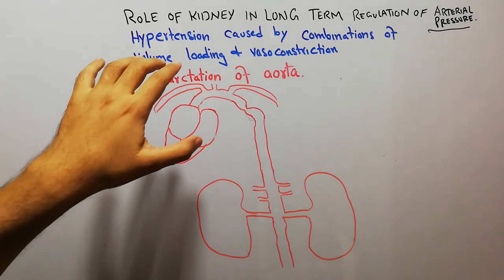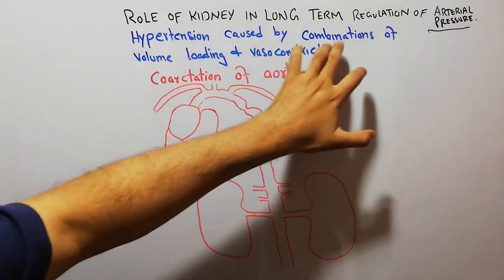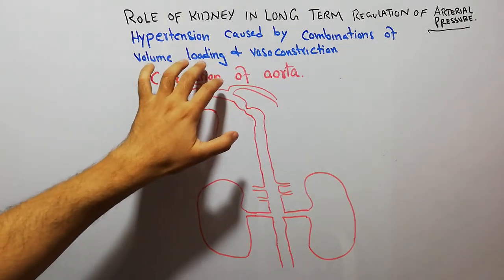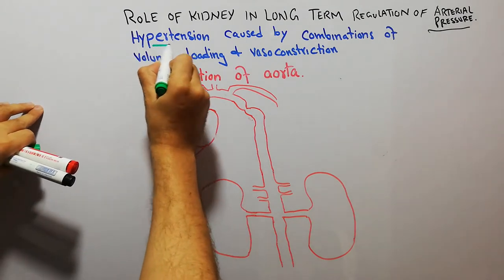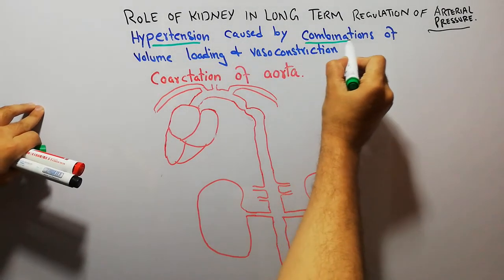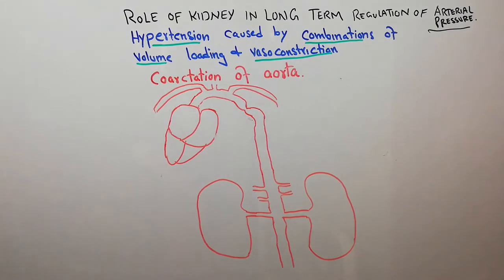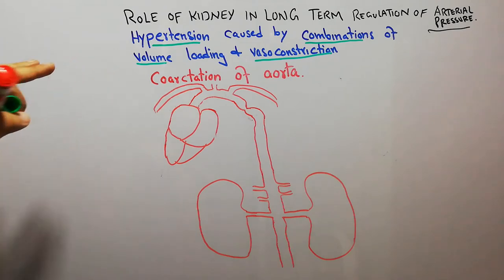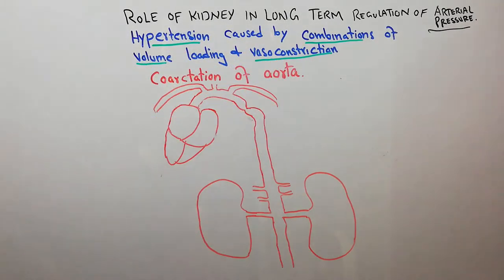Today we are going to start a new series of lectures about hypertension caused by combinations of volume loading and vasoconstriction. We will be focusing on the types of hypertension in which there are two components: combinations of volume and vasoconstriction. Previously we discussed different types of hypertension in which angiotensin was involved. Now we will focus on combinations of volume loading and vasoconstriction.